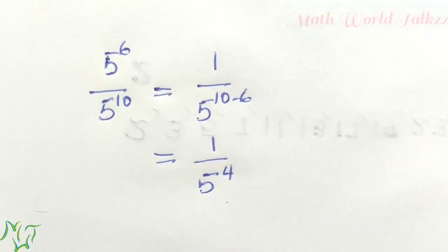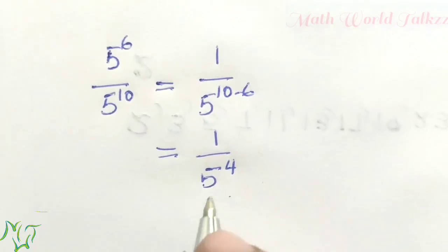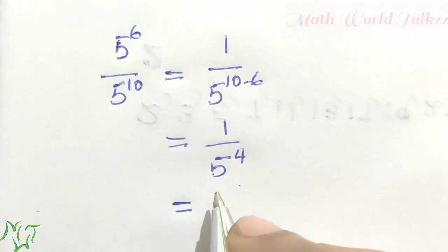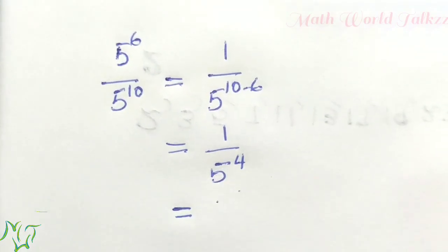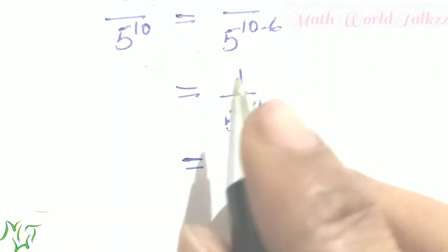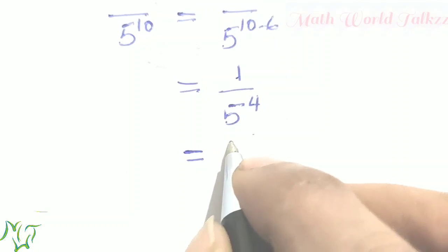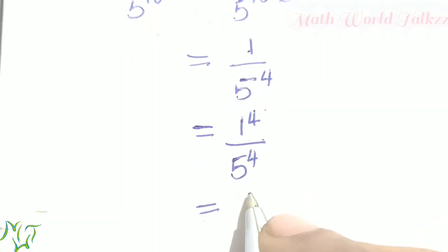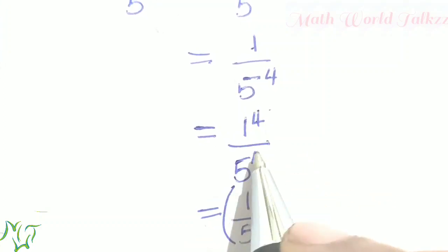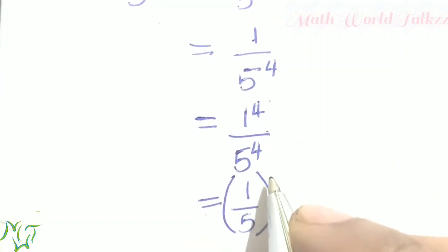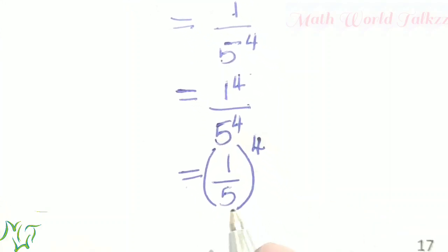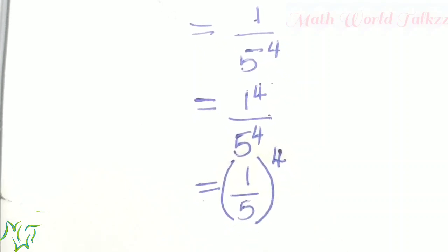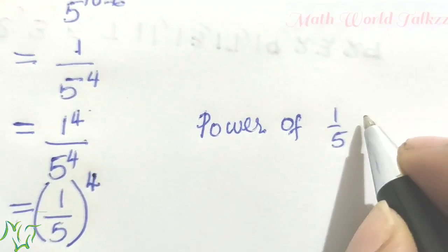In the question we want to find the power of 1 by 5. We can rewrite 1 by 5 raised to 4 as 1 raised to 4 by 5 raised to 4, which is the same as 1 by 5 whole raised to 4. So we take the power 4 outside, and the power of 1 by 5 is 4.